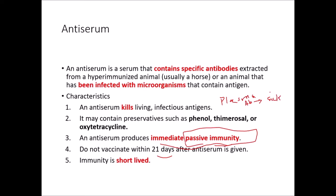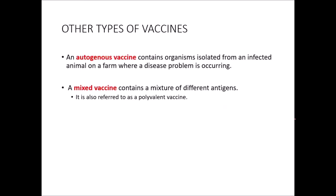Some other types of vaccines: we can use an autogenous vaccine that contains organisms isolated from an infected animal on a farm where we're seeing a disease problem, and we can spin that down and give it to other animals on the farm. A mixed vaccine is also referred to as a polyvalent vaccine. We use this often in veterinary medicine — it contains a mixture of different antigens like DHLPP or FVRCP when talking about dog and cat vaccines, or the five-way, four-way, or three-way when mixing encephalitis vaccines with horses.